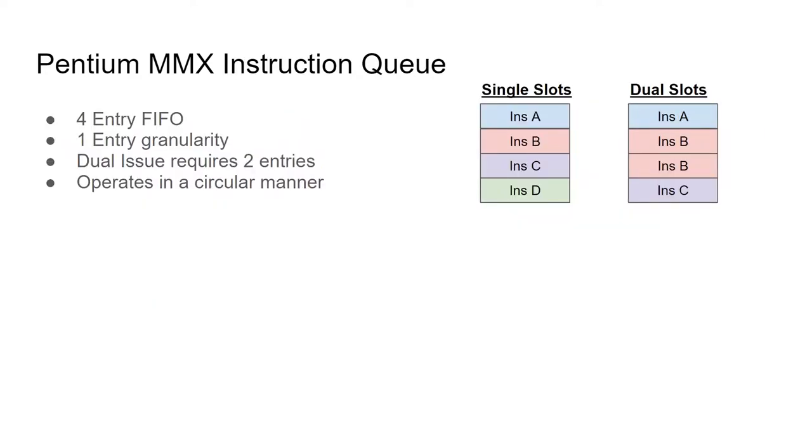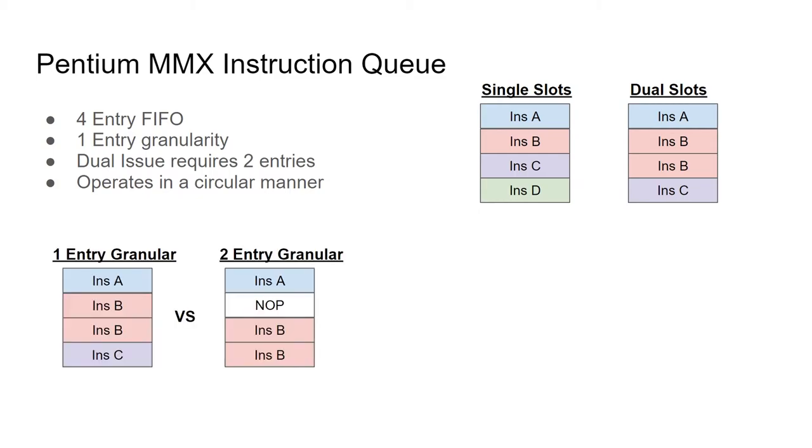Before going into examples, there is a bit of extra information required regarding the instruction queue. As a reminder, these are full x86 instruction bytes, and not micro-operations at this point. One of the documents state that the instruction queue FIFO contains four entries, and it's implied that instructions longer than seven bytes require two slots. It's possible that the queue had a granularity of two entries, effectively making it a double buffer. However, it's more likely that the FIFO had a granularity of one entry. This would prevent any of the queue entries from being unused, allowing for more flexibility when the D1 stage performs pairability checking.